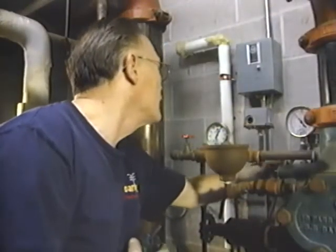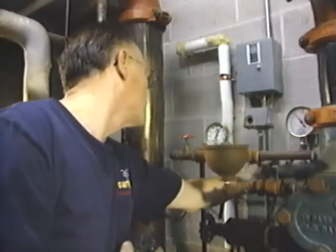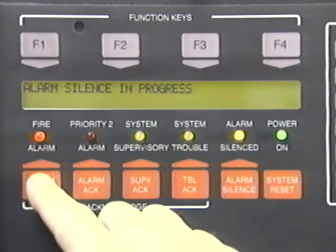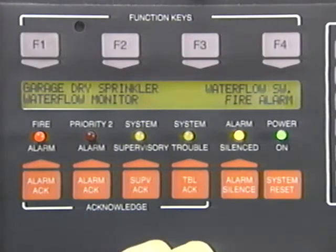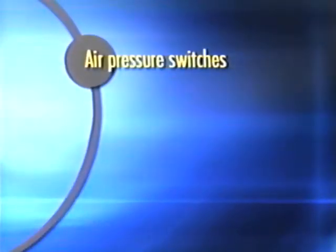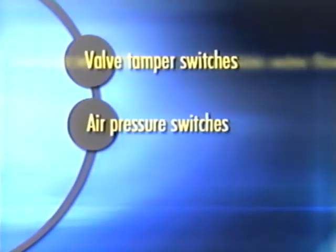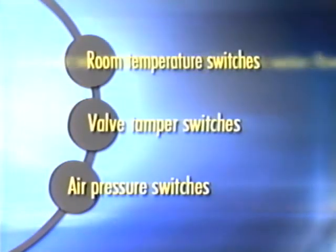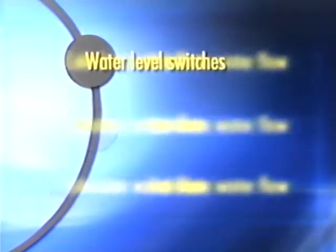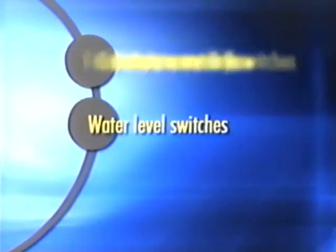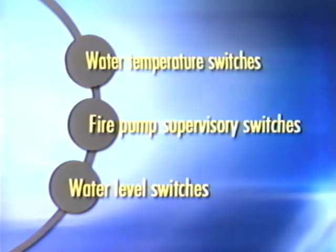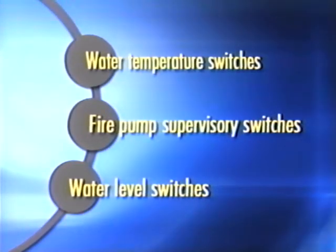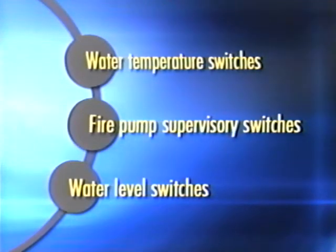With a dry pipe system, flow water through the alarm test bypass connection and verify receipt of alarm. Supervisory signal initiating devices should be tested quarterly. High or low air pressure switches, valve tamper switches, room temperature switches, water level switches, fire pump supervisory switches, and water temperature switches should be tested. Test criteria are found in NFPA 72.